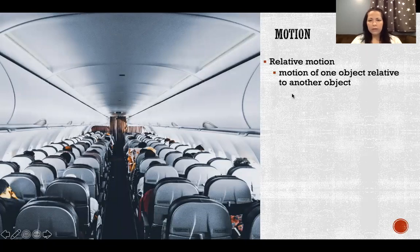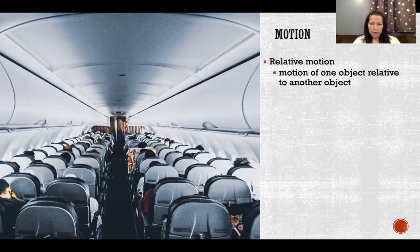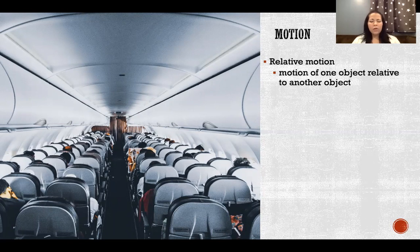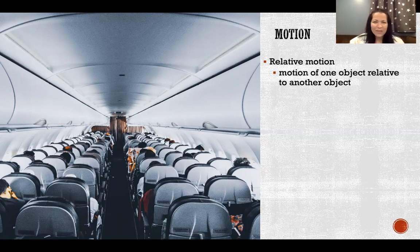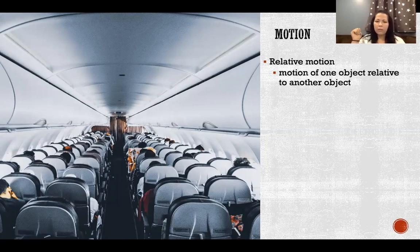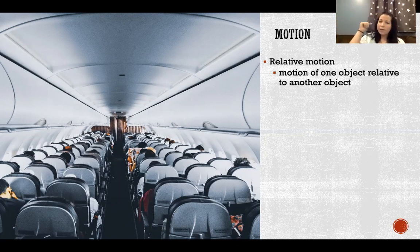Relative motion is the motion of one object relative to another object. A good example is the inside of an airplane. The plane is hurtling through space at an incredibly fast pace, and yet you might be walking in the opposite direction down the aisle. Maybe you're walking towards the back while the plane is flying at 500 miles an hour. Your movement towards the back of the plane is relative motion to the plane itself — in reality, you're hurtling through space at hundreds of miles per hour, and you're only moving towards the back relative to the plane.